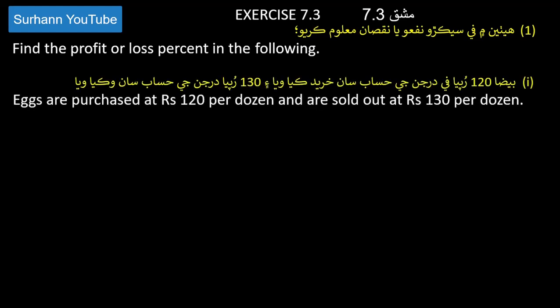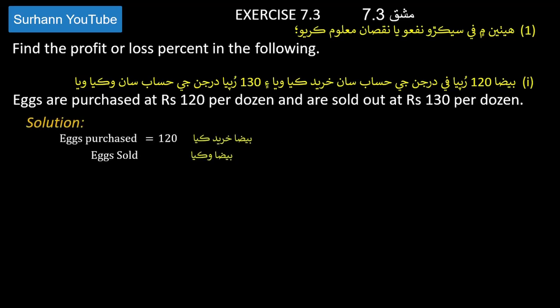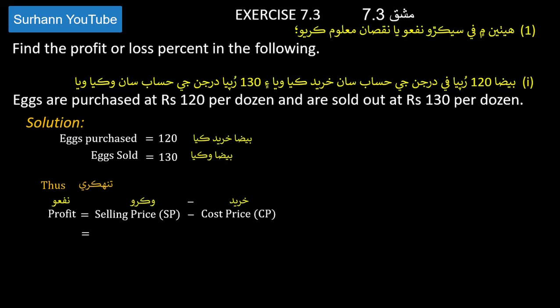Problem 1: Eggs are purchased at 120 rupees per dozen and are sold at 130 rupees per dozen. Eggs purchased at 120 rupees, eggs sold at 130 rupees. Since the selling price is greater than the cost price, we apply the profit formula.